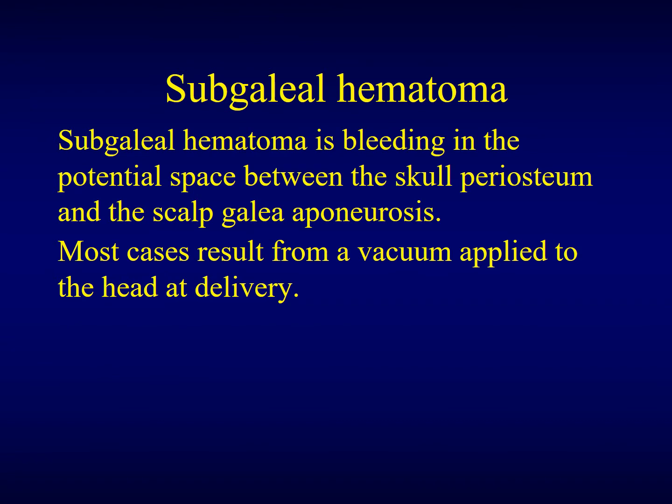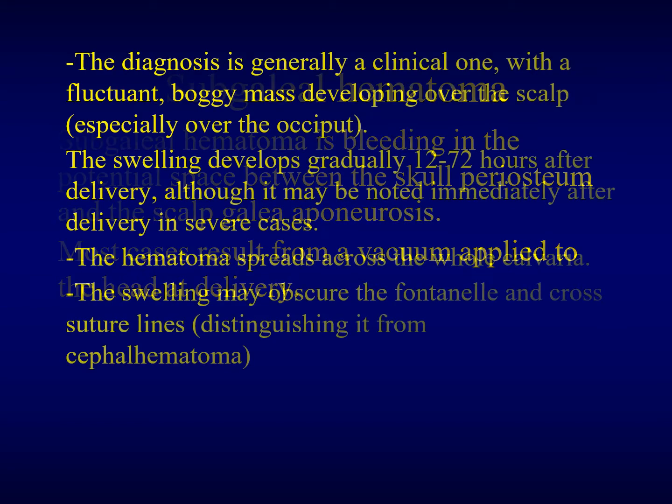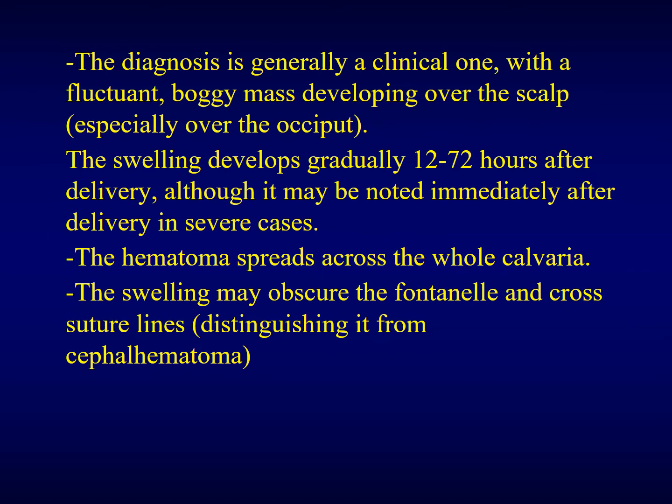The subgaleal hematoma is bleeding in the potential space between the periosteum and the galea aponeurotica. It results from vacuum applied to the head causing bleeding. The diagnosis is usually clinical. We find this patient with a fluctuant boggy mass that develops over the scalp, especially over the occiput. It develops gradually, 12 to 72 hours after delivery, and increases gradually — though in severe cases it may be noted immediately after birth. The hematoma spreads across the whole calvaria, and the swelling may obscure the fontanelle and cross the suture lines, which distinguishes it from cephalohematomas.